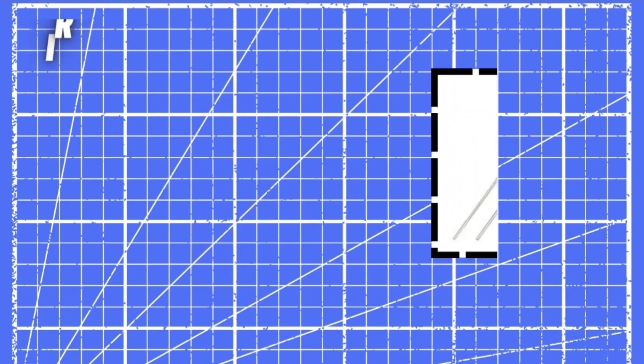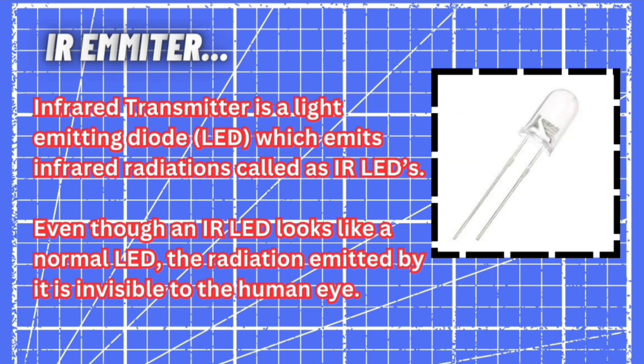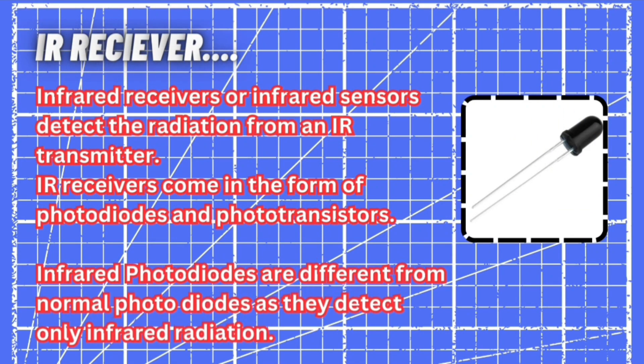Now let's see what is an IR emitter. An infrared transmitter is a light emitting diode which emits infrared radiation, called an IR LED. Even though an IR LED looks like a normal LED, the radiation emitted by it is invisible to human eyes. In simple terms, an IR emitter emits light at the same wavelength as an IR receiver, so that the IR receiver can receive the emitted light from the emitter.